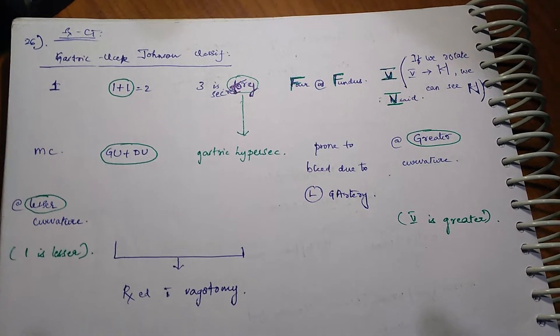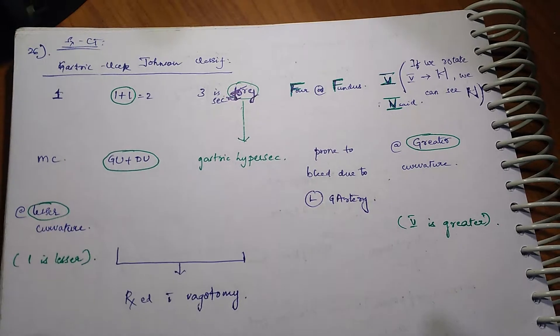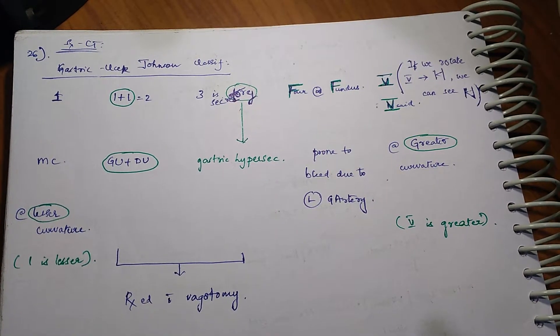Type 1 is the most common type. One looks like L and also it is the lesser number among all, so it occurs at lesser curvature.